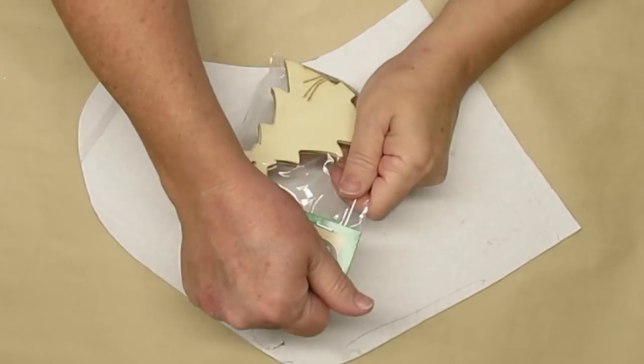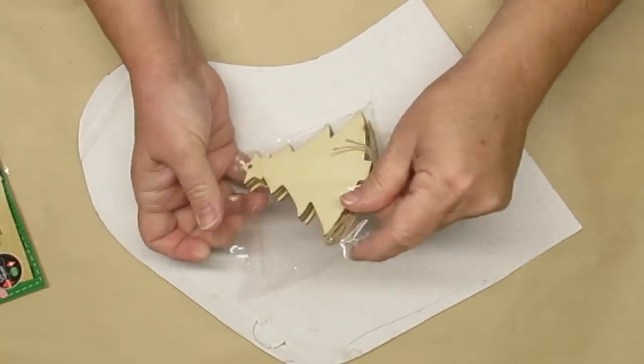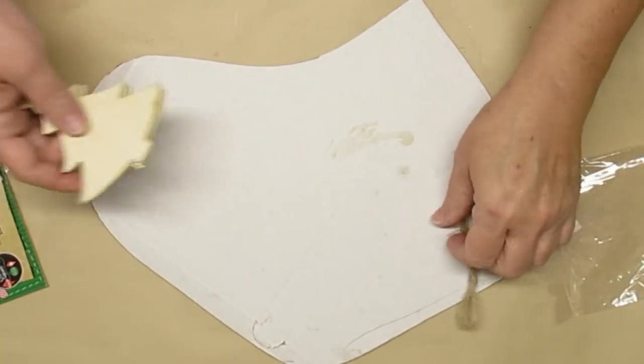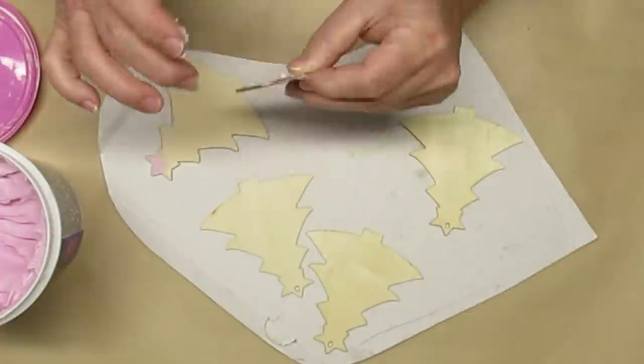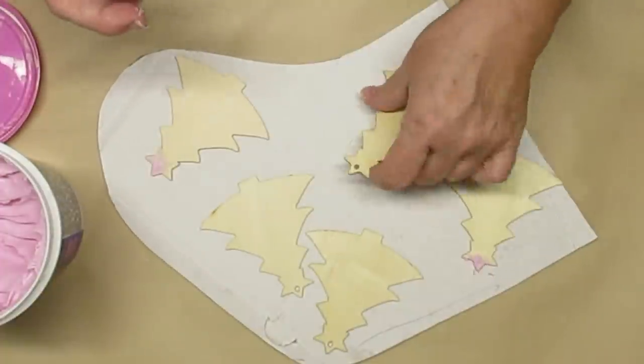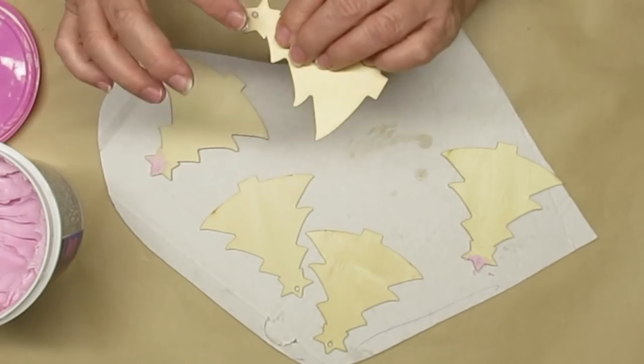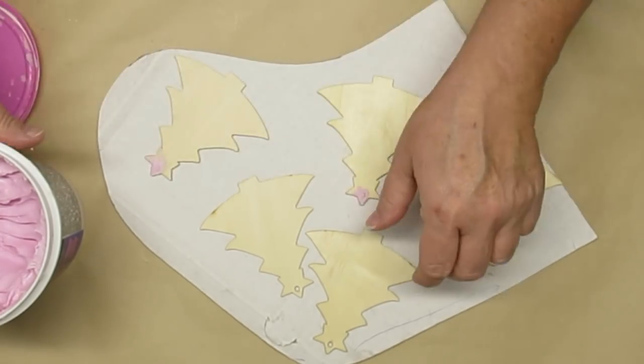For this project I'm going to use these Christmas trees that are a garland from the Dollar Tree but I'm going to use them in a different way. The first thing I'm going to do is add some of my dry decks spackling and fill in the holes at the top.